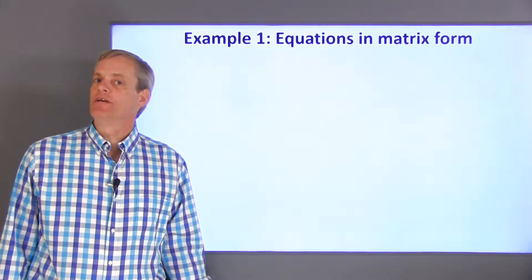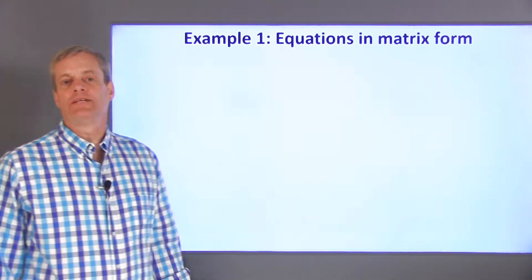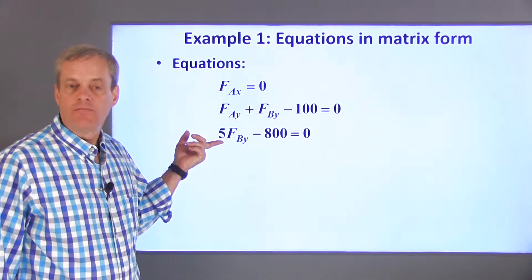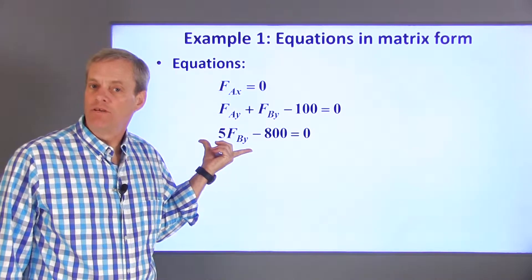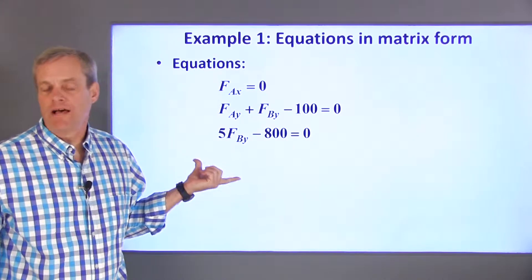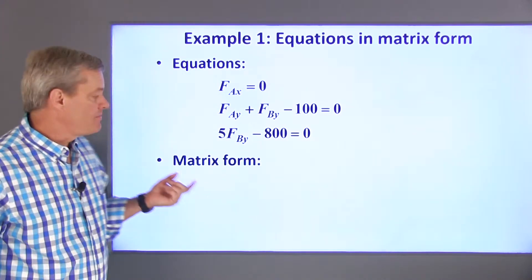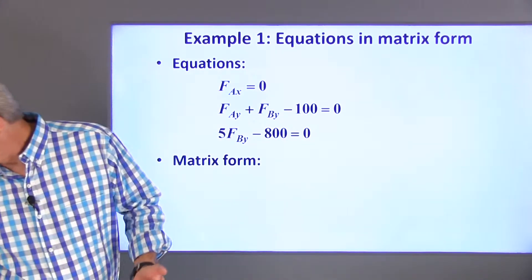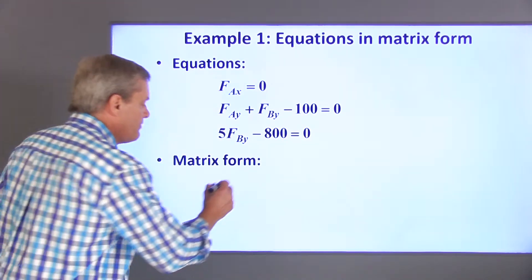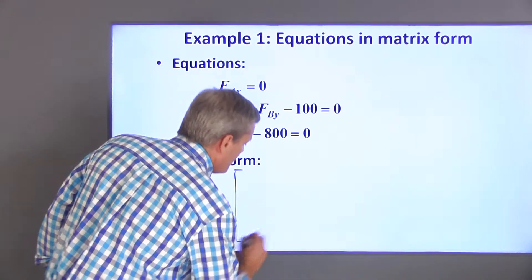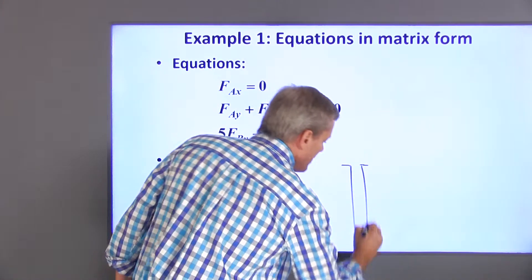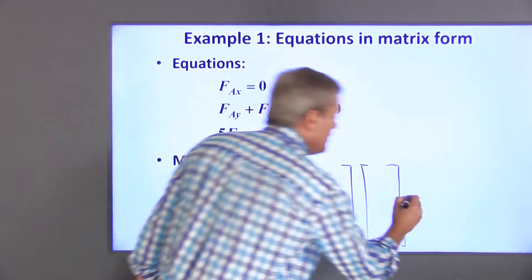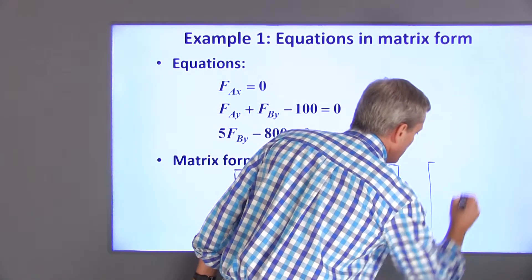Now that we've got the unknowns defined and the equations written, we can place them in a matrix. These are the equations governing the system. We want to use linear algebra techniques to solve the equations and find numerical values for the unknowns. This means that we need to write the equations in matrix form. Since there are three equations and three unknowns, this will be of the form of a 3 by 3 matrix A times a three-element column vector X containing the list of unknowns is equal to a three-element column vector B.